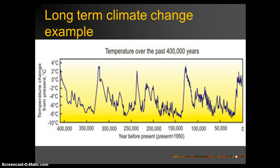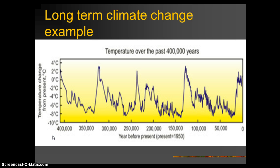On this long-term graph, zero represents present day, and you're going back in time 50,000 years, 100,000 years, all the way back to 400,000 years. We'll talk in class about how we get that information — things like land sediments, where we dig down and look at sedimentation layers, and ice cores. These allow us to take a peek back in time. The graph shows temperature change from present, ranging from zero down to a negative 10 degrees Celsius change.